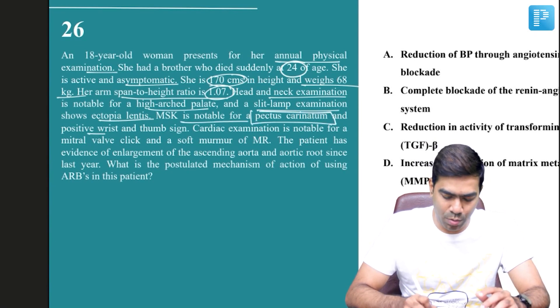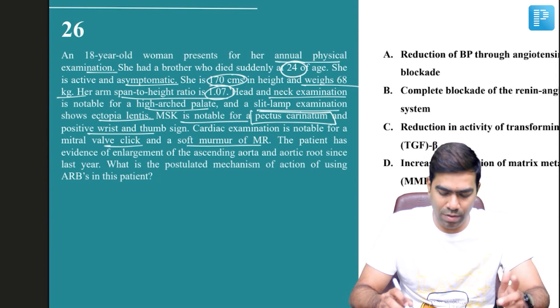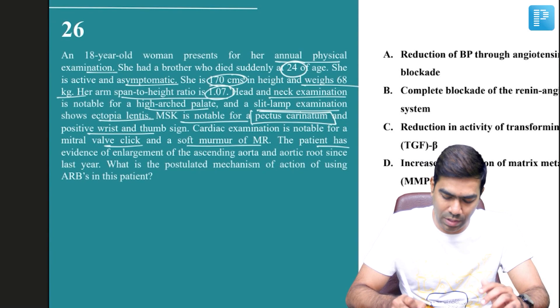Musculoskeletal examination is notable for pectus carinatum and a positive wrist and thumb sign. Cardiac exam is notable for a mitral valve click and a soft murmur of MR, suggestive of mitral valve prolapse.